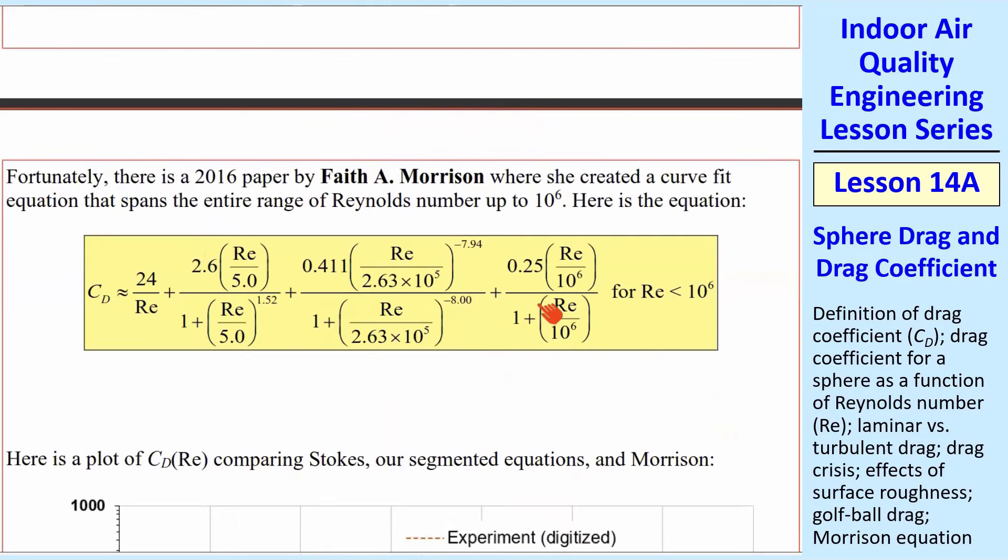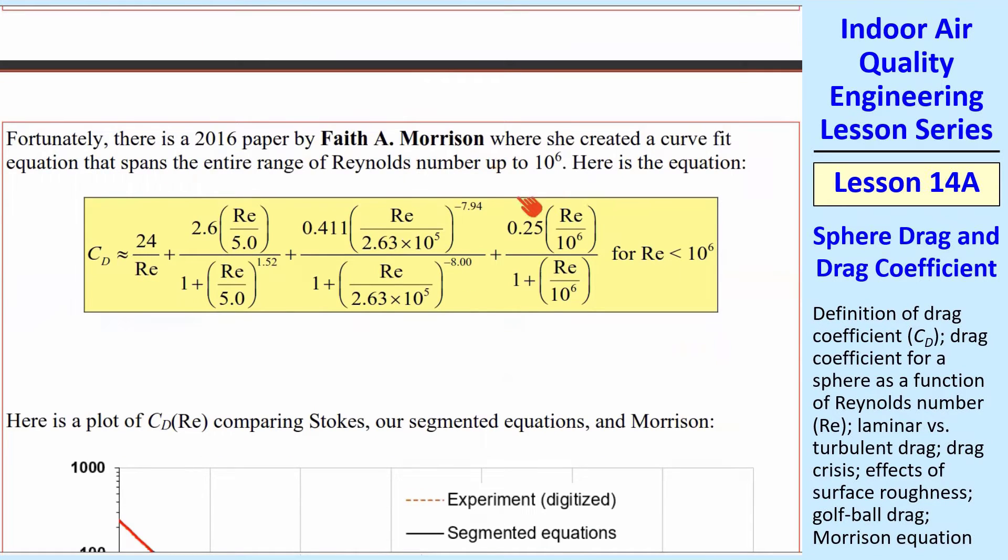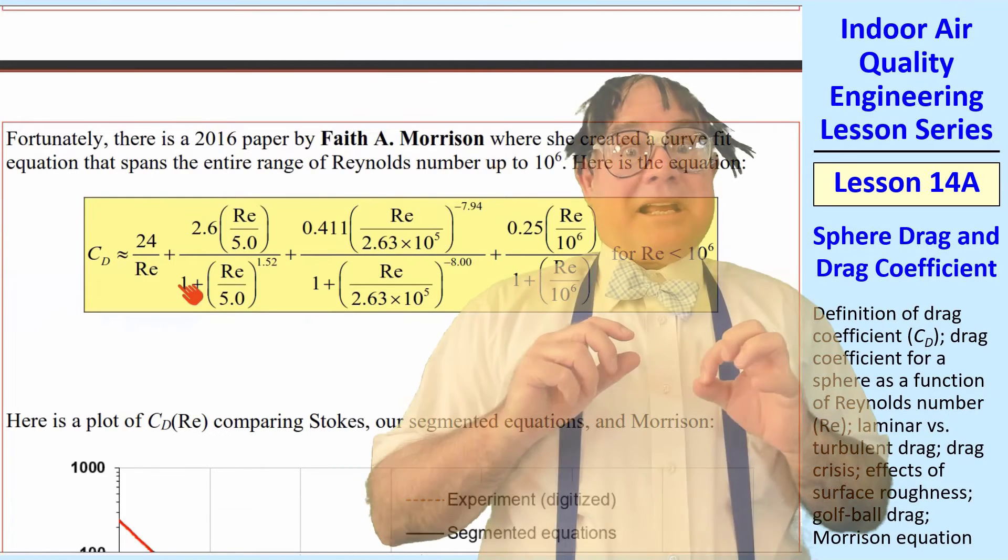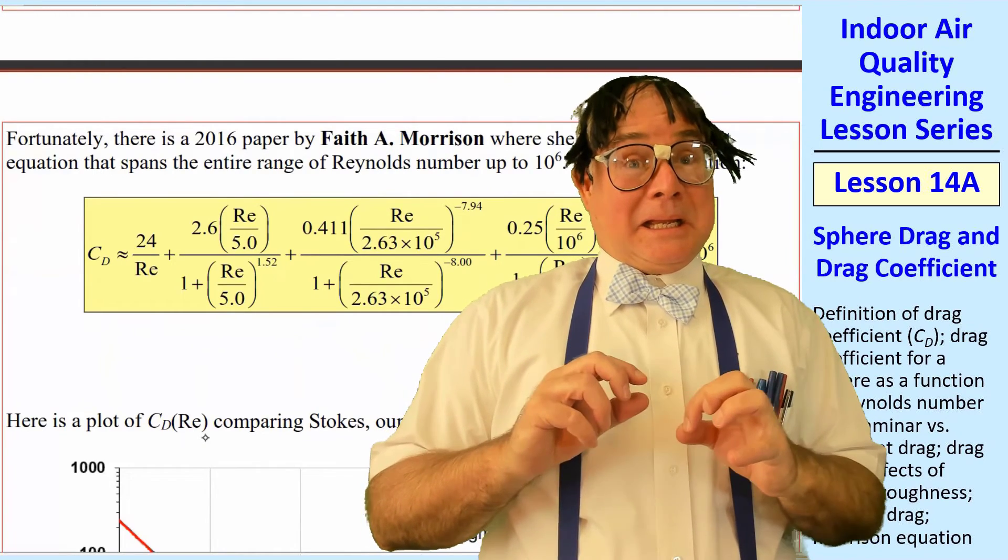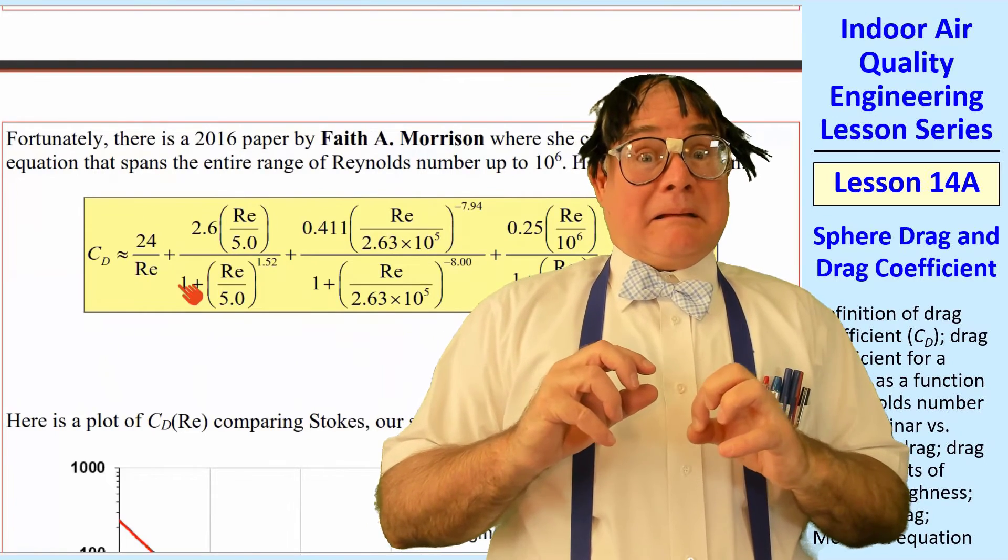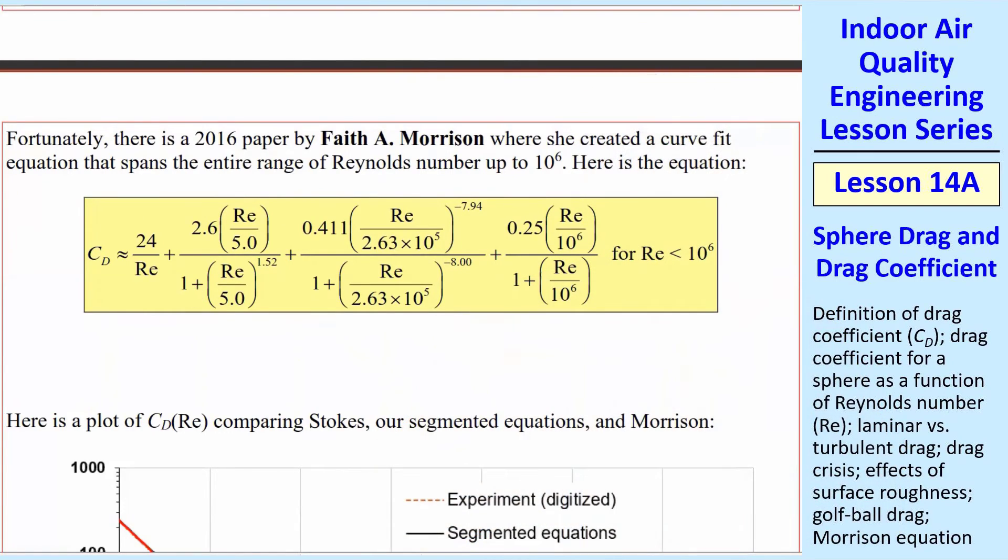And so this is not a very good way to do the segmented equations with all these ifs. So fortunately, in 2016, there's a professor, Faith Morrison, who figured out a curve fit for all the Reynolds numbers below 10 to the 6th. And here's her equation. That's a scary-looking equation. Will we have to use it? Yes, but don't get yourself all worked up over it. It is a big, long equation, but what's nice about it is it's explicit. There's no iteration required, and it's accurate. It matches the data pretty well, very well.